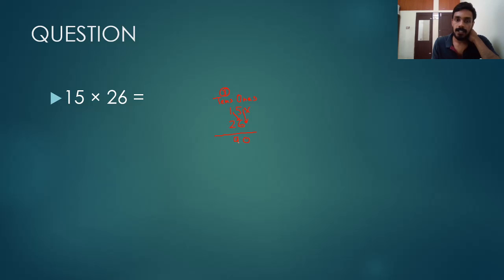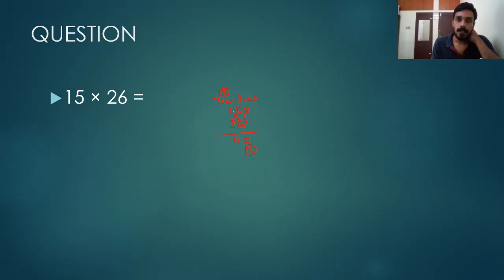In the second step, we cross-multiply 5 and 2. So 5 and 2 is 10. We write 0 and carry 1.